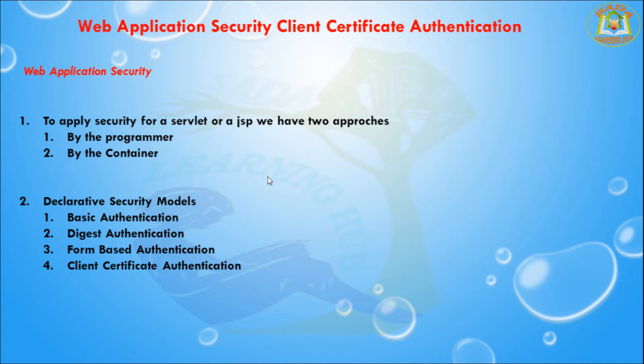Now that you've created a web application, you need to provide security. To provide security to your web application we need to go through two ways. The first one is by the programmer and the second one is by the container. By the programmer means the programmer only needs to take care of providing the security — manually implementing the security code in a servlet or JSP, which is called programmatic security. Programmatic security increases the burden on the servlet programmer, so declarative security is applied.